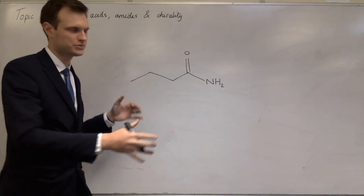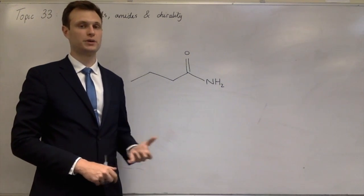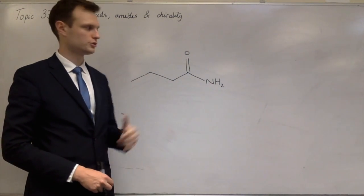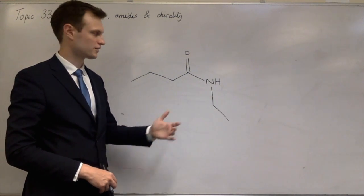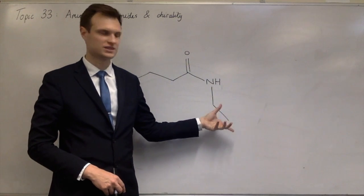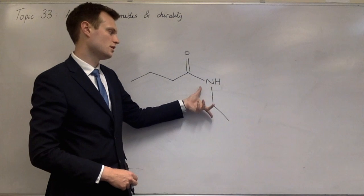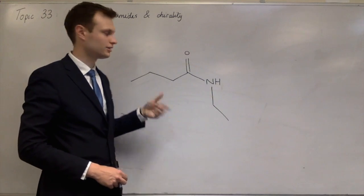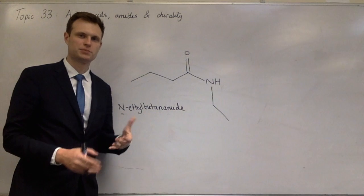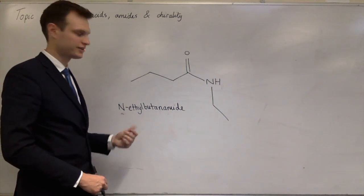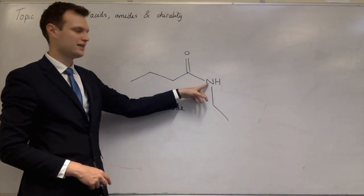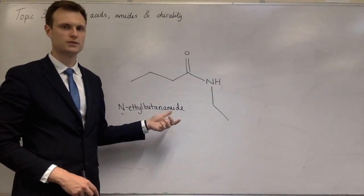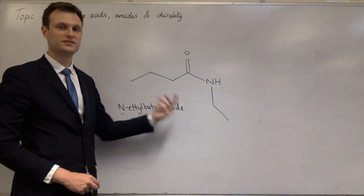We don't need to be able to name the dipeptides formed by two amino acids joining together — we need to be able to name simpler amides. Like this primary amide: it's got four carbons, so it's called butanamide. For secondary amides, like this one, there's an ethyl group attached to the nitrogen. The way to name it is to put that as a prefix: N-ethyl. So it would be N-ethyl butanamide. The N indicates the ethyl group is on the nitrogen, not, for instance, on the second carbon, which would be 2-ethyl butanamide — and that is obviously different from this secondary amide.